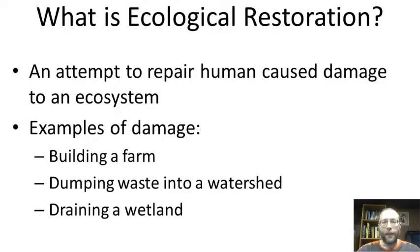For example, a habitat could be destroyed by building a farm, or you cut down a forest to build a farm or a factory, or a paper mill dumps waste into a river or a watershed. A watershed is a large area that drains water into a river — like the Mississippi watershed, which covers most of the United States. All the groundwater and streams in that watershed flow into the Mississippi River. Also, draining a wetland is an example of human-caused damage.